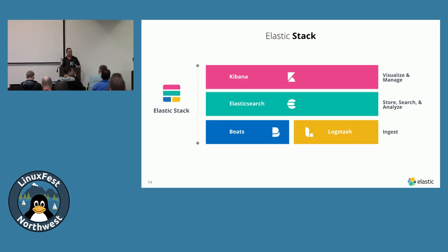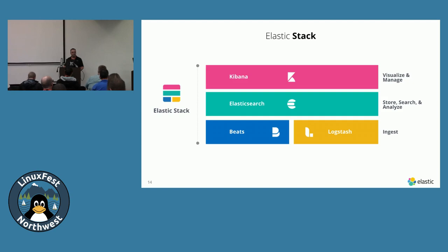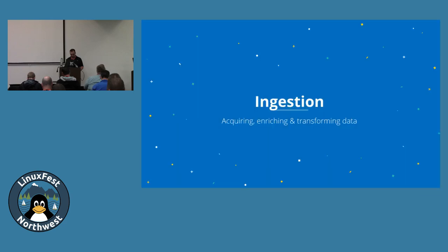A common Logstash use case is combining data from other sources. For security, you can grab malware IP addresses from published services, and as you ingest logs from your website, you can tag those IP addresses if they belong to the malware list — so they're identified as you ingest. Kibana evolved from a reporting and GUI tool into also a management tool.